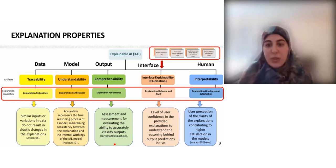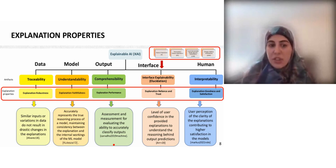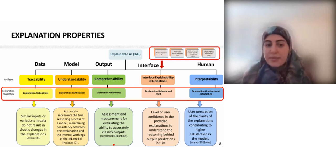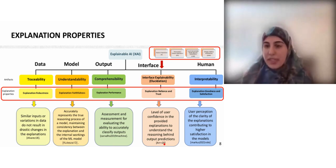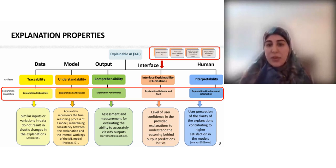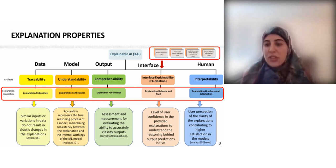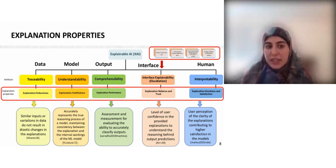Explanation performance is related to comprehensibility, referring to the assessment of the model's ability to accurately classify and predict the output. We also have explanation reliance and trust, linked to the interface explainability models, determining the level of user confidence in the provided explanation. Lastly, we have explanation goodness and satisfaction, concerned with human credibility, reflecting the user's perception of the clarity and understandability of the explanation.